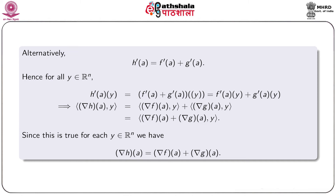We show the same calculation in an alternative fashion. We know we can express the linear transformation h′(a) as the sum f′(a) + g′(a). Hence for each y in Rⁿ, h′(a)(y) = (f′(a) + g′(a))(y) = f′(a)(y) + g′(a)(y). Therefore ⟨grad h(a), y⟩ = ⟨grad f(a), y⟩ + ⟨grad g(a), y⟩ = ⟨grad f(a) + grad g(a), y⟩. Since this is true for every y in Rⁿ, using our earlier result, grad h(a) = grad f(a) + grad g(a).